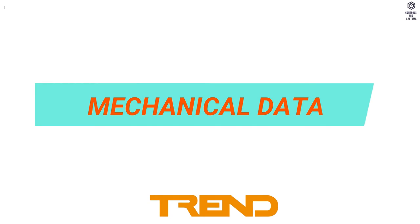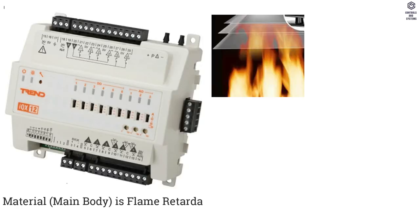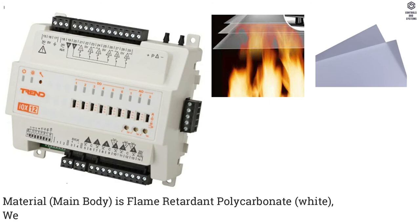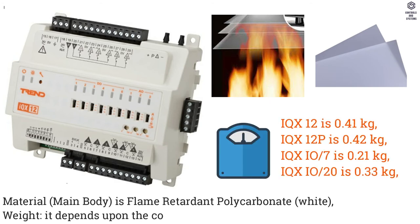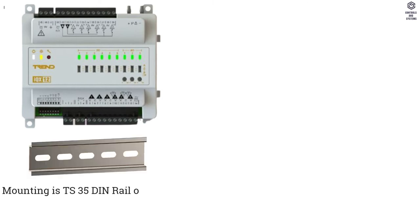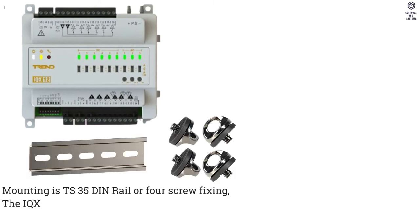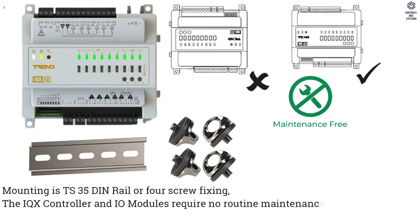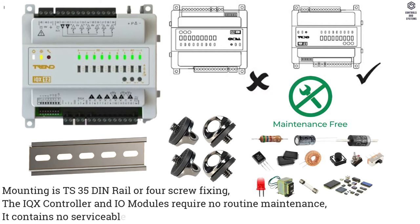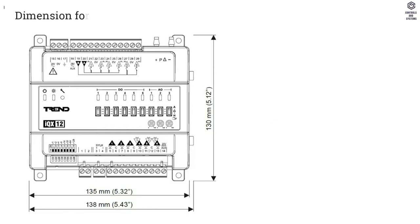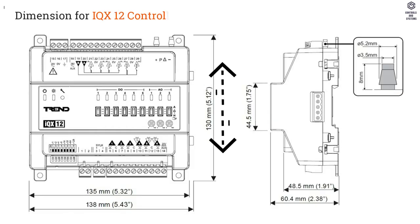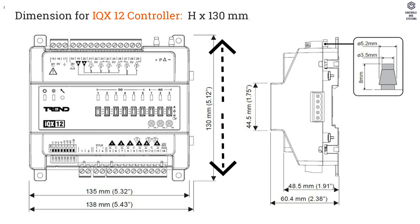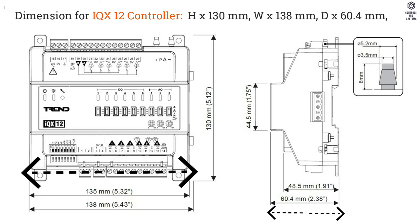Mechanical Data — Material, Main Body: Flame Retardant Polycarbonate, White. Weight depends upon the controller variant. Mounting is TS35 DIN Rail or 4-screw fixing. The IQX Controller and IO Modules require no routine maintenance and contain no serviceable parts. Dimensions for IQX12 Controller: Height 130 mm, Width 138 mm, Depth 60.4 mm.